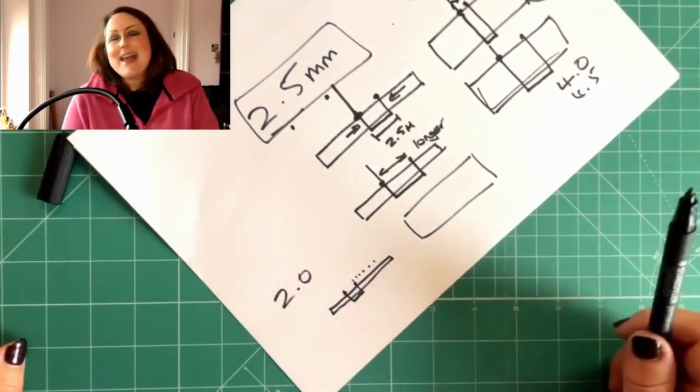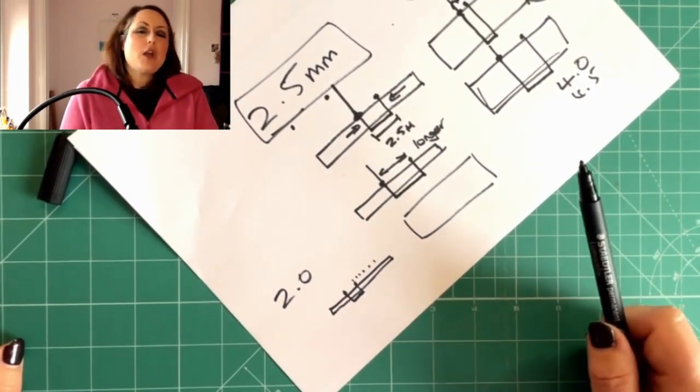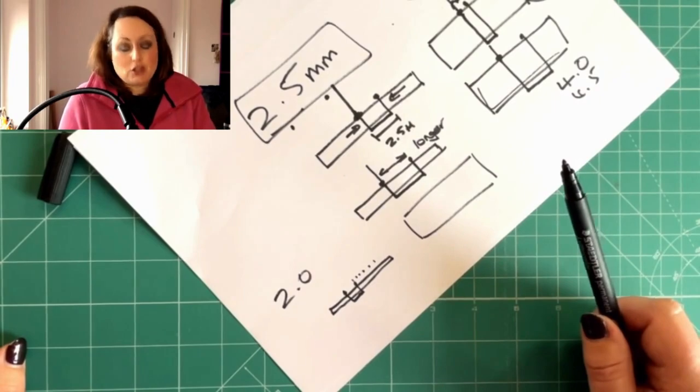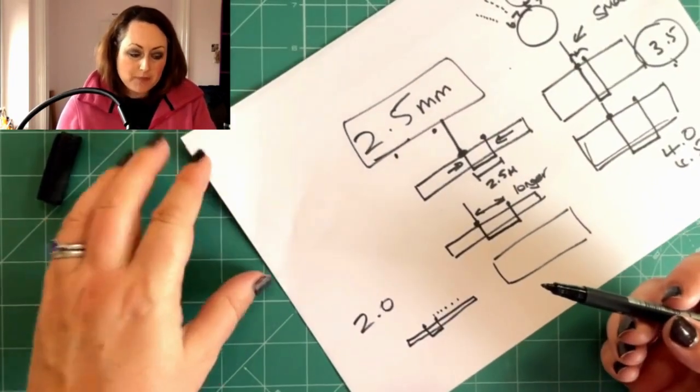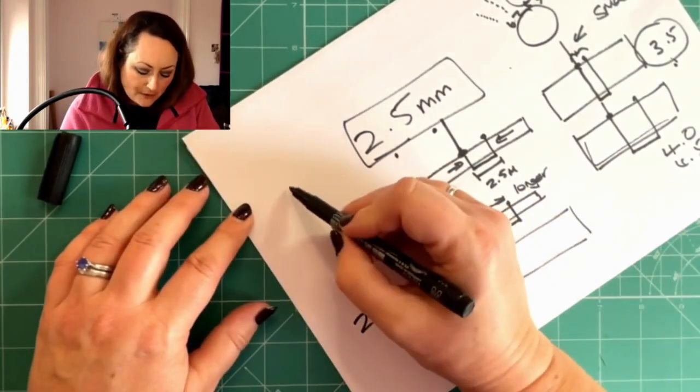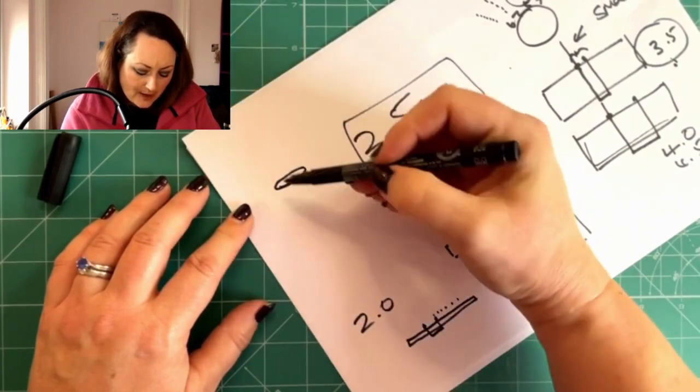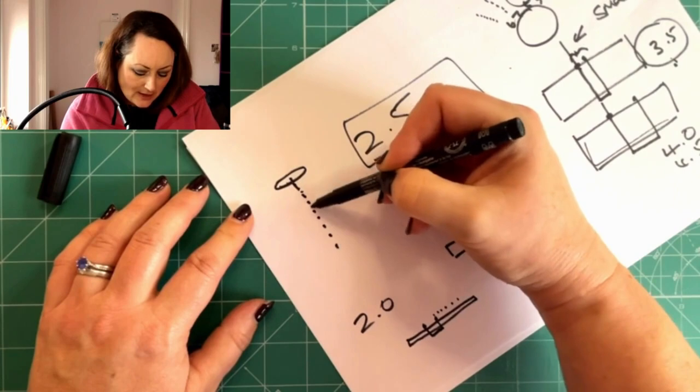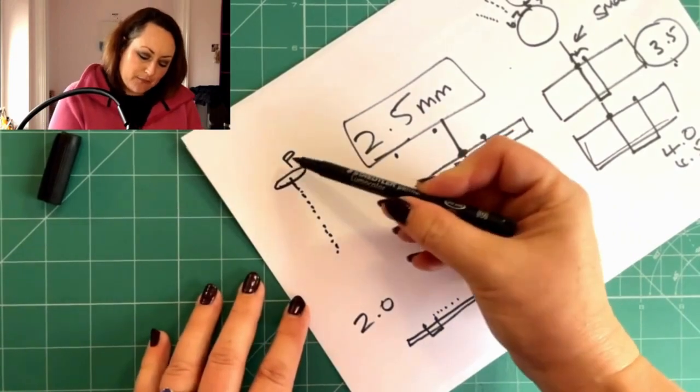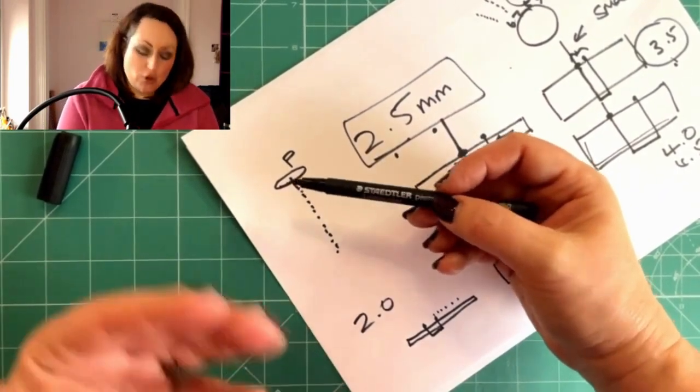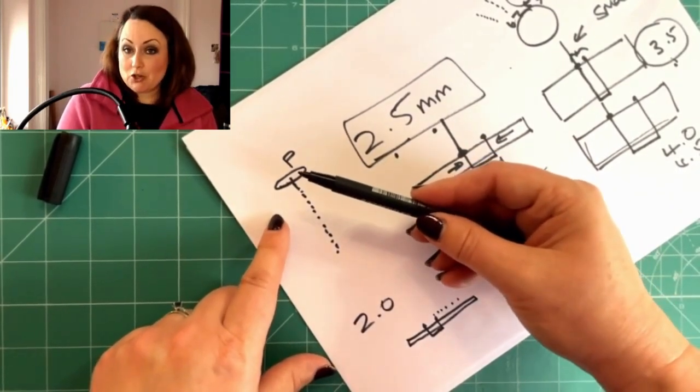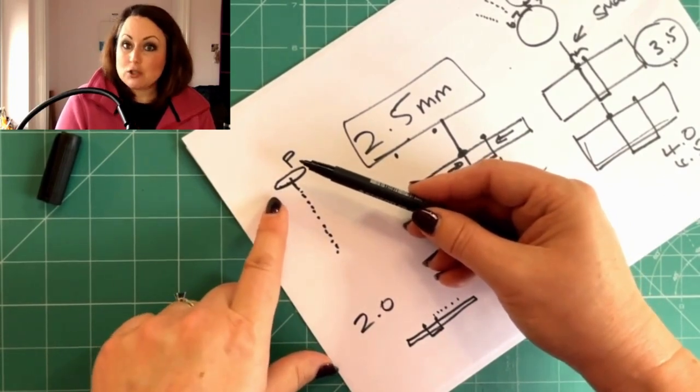But let me just explain one other thing. If you are a quilter and you are piecing, you will notice that, let's just say you've got a computerized machine and you put it on the patchwork stitch. So you will find on your preloaded stitches that you've got, one of them, you get a little oval, and you'll have a little dotted line that shows your stitch length and it will have a little P somewhere. That means it's patchwork.